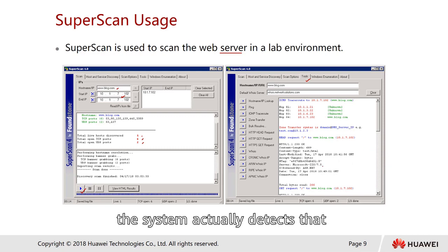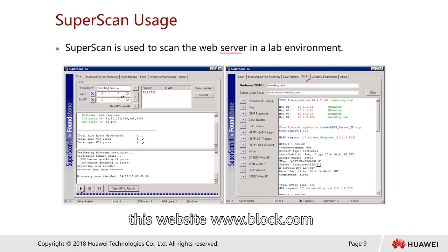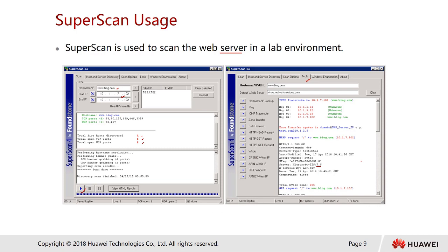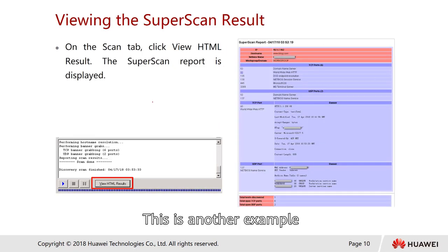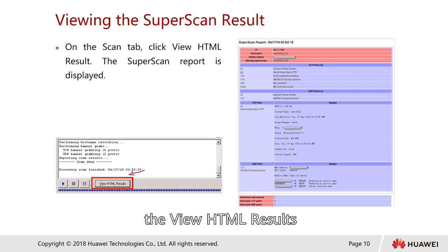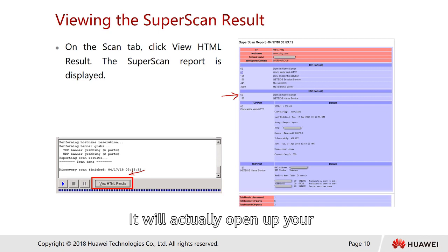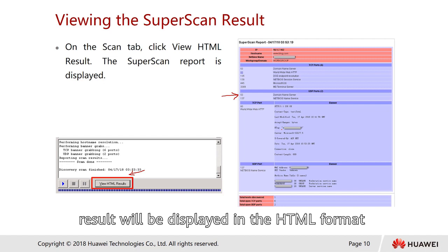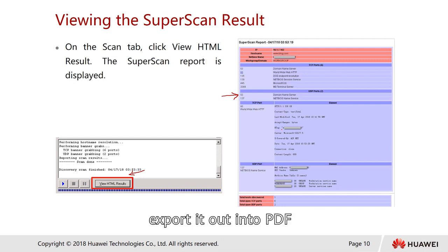This is an example where the system detected that the web server running for www.blog.com is actually running on Microsoft IIS web server. On another tab, you can click on 'View HTML Result' and it will open your web browser displaying the result in HTML format, which you can then export to PDF or whatever format you prefer.